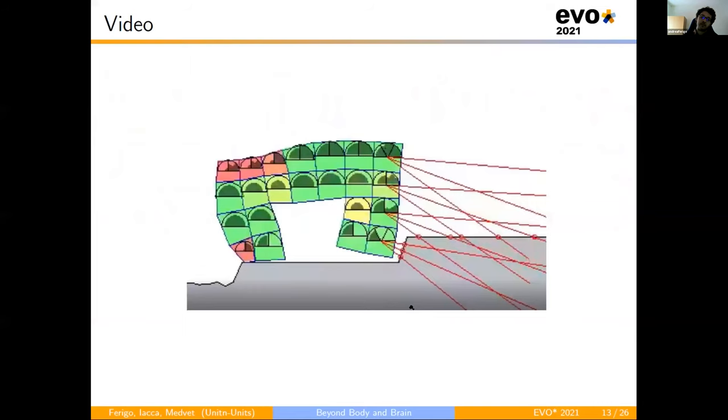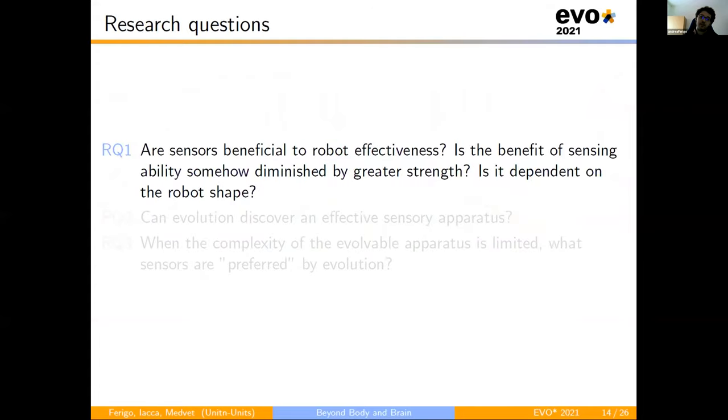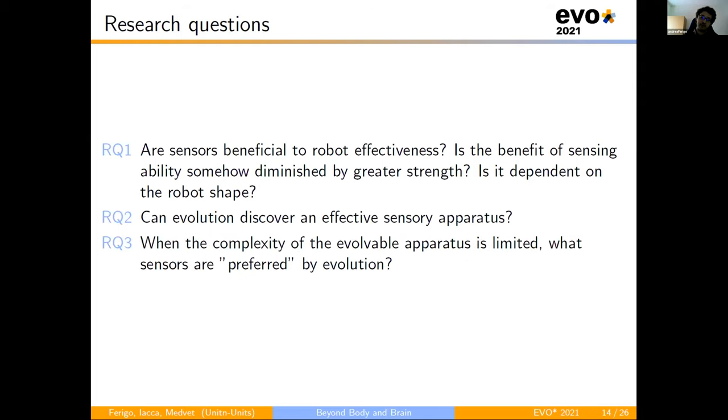So from this background, we move on to the results part where we pose three research questions. The first, are sensors beneficial to robot effectiveness? Is the benefit of sensing ability somehow diminished by greater strength? Or in other terms, is it dependent on the robot shape? The second, can evolution discover an effective sensor apparatus? And finally, when the complexity of the evolved apparatus is limited, what sensors are preferred by evolution?